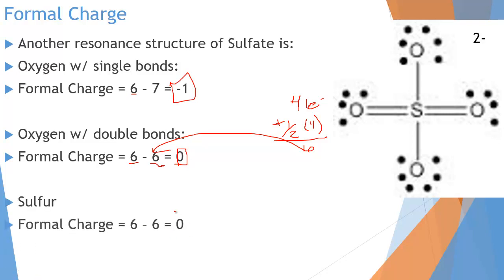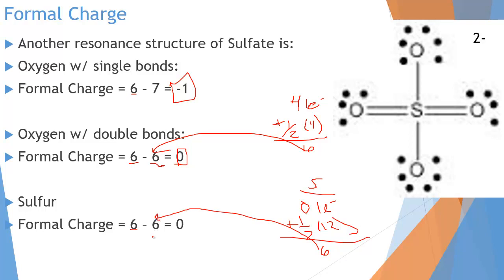Now I have a formal charge of zero for the double-bonded oxygens and negative one for the single-bonded oxygens. Watch what happens to sulfur in this structure. Sulfur also has six from the periodic table. It has zero lone electrons plus half of the twelve shared electrons — half of twelve is six — giving zero plus six equals six. So formal charge for sulfur is six minus six equals zero. By changing the Lewis dot structure, we get very different formal charges: the previous structure gave oxygen negative one and sulfur plus two, while this new structure gives some oxygens negative one, some oxygens zero, and sulfur zero.